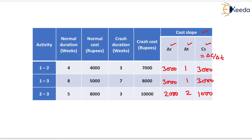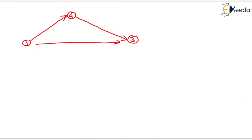We will now draw the network diagram as per the conditions given in the question. Event 1 is shown here, event 2 is shown here, and event 3 is shown here. The normal duration between events 1 and 2 is 4 weeks with a crash duration of 3; between 2 and 3 it is 5 and 3; and between 1 and 3 it is 8 and 7.